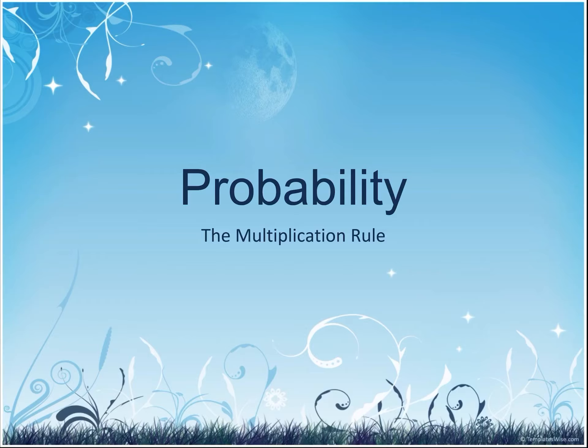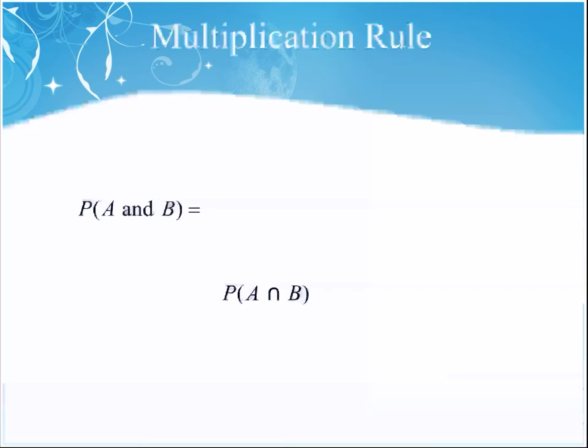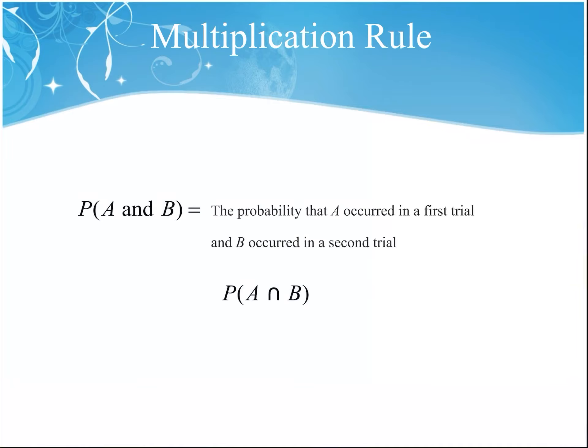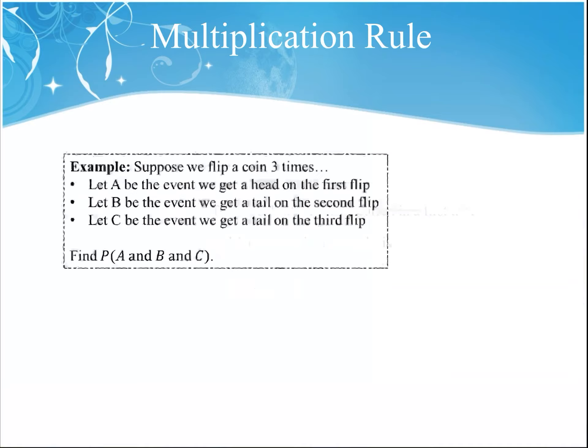Let's talk about our second rule for probability, which is the multiplication rule. The multiplication rule is used when we have two consecutive events happening and we want to find the probability of both of those events happening. We write the probability of event A and then event B happening, or P of A intersect B, as the probability that event A occurred in a first trial and then B occurred in the second trial.